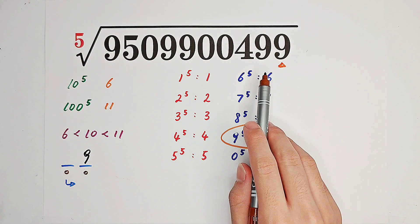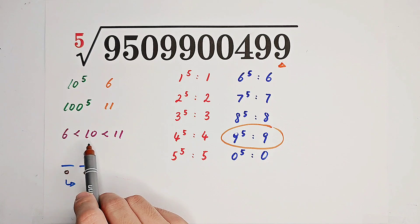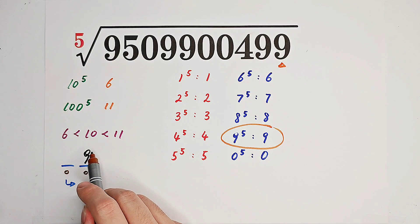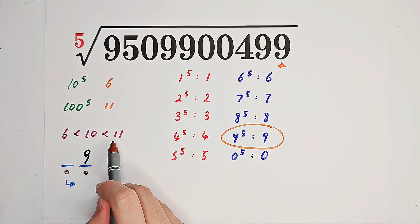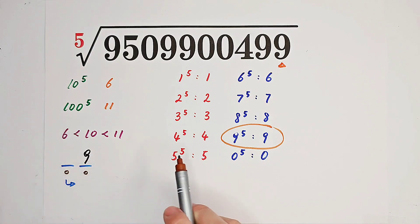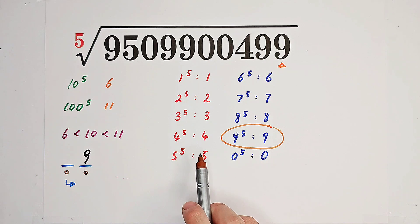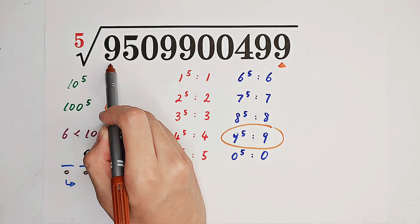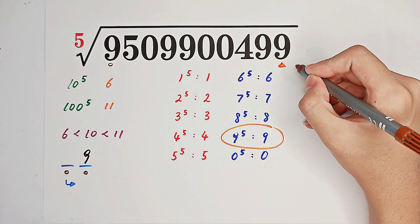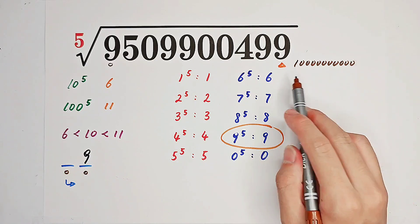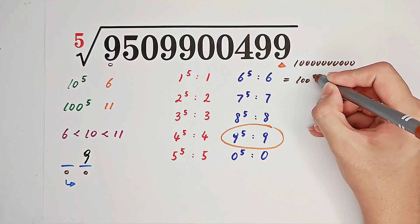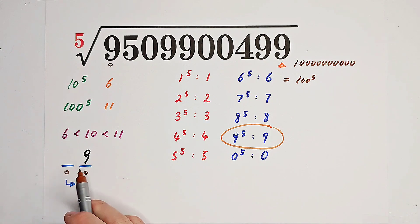Our number has 10 digits. 100^5 has 11 digits and 10^5 has 6 digits, so 10 is much closer to 11 than to 6. We can predict the result is very close to 100. Have you noticed that the first digit of this number is 9? So this number is very, very close to 10 to the power of 10, which is actually 100^5. So I guess the answer will be 89 or 99.